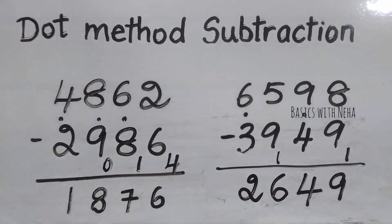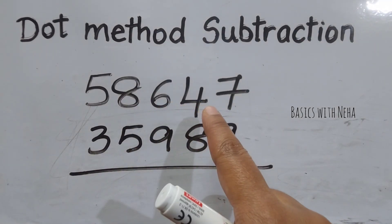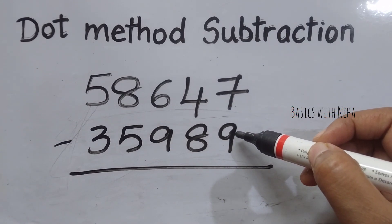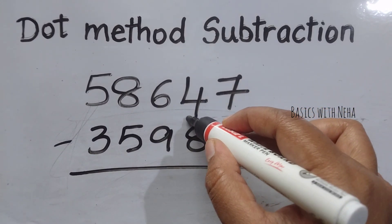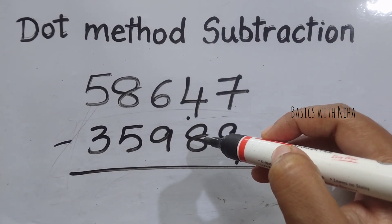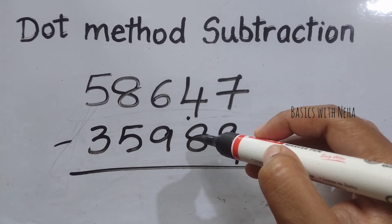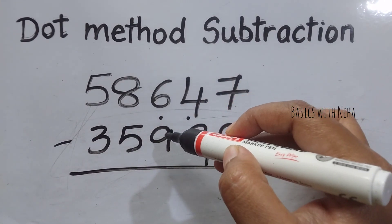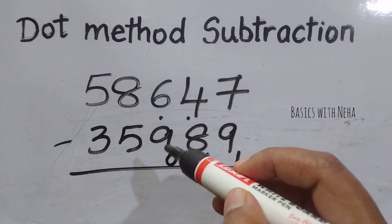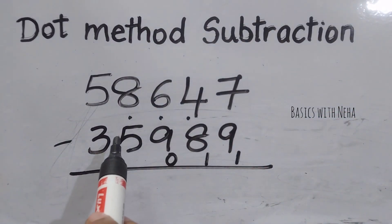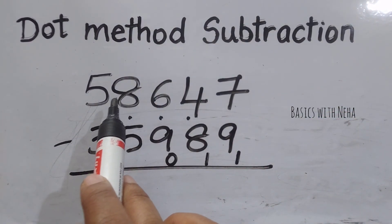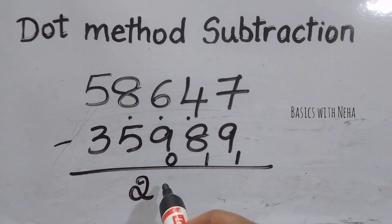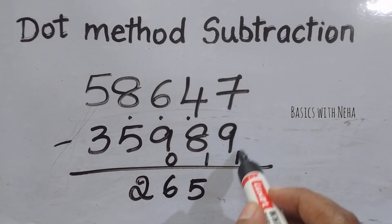Let's try with 5 digits now: 58647 minus 35989. The minuend is smaller than the subtraction, so take the complement of 9 on base 10, which will be 1. Since you have used the complement, put a dot. Again the minuend is smaller than the subtraction, so consider only this number and take the complement of 8 on base 9, which will be 1. You have used the complement — put a dot. Don't consider that dot because the minuend is smaller than the subtraction; take the complement of 9 on base 9, which will be 0. Since you have used the complement, put a dot to the next one. Consider that dot to be 1 because the minuend is larger than the subtraction: 8 minus 6 will give me 2. Then 6 plus 0 is 6, 4 plus 1 is 5, and 7 plus 1 is 8.